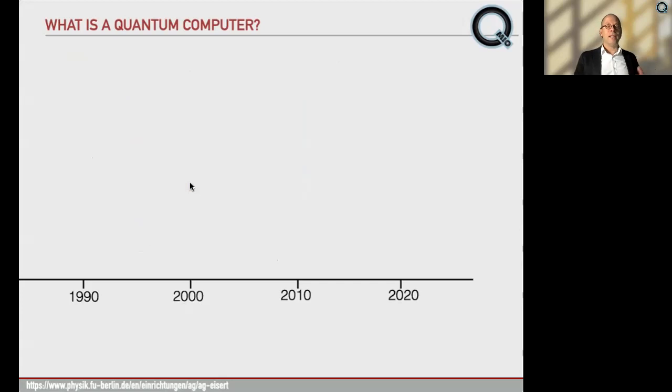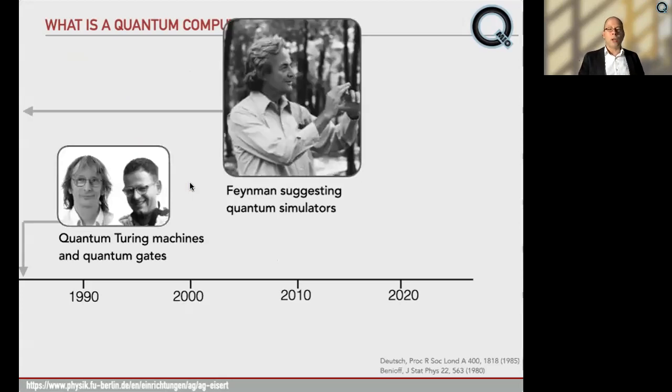It started off as rather conceptual investigations in the 80s when Richard Feynman not only understood that it's a smart idea to use quantum systems when simulating other quantum systems than using classical computers. He already suggested ideas of polynomial reductions in a pretty specific way. When David Deutsch and Paul Benioff were playing around with quantum Turing machines, they were again motivated by deeply foundational considerations on computing.